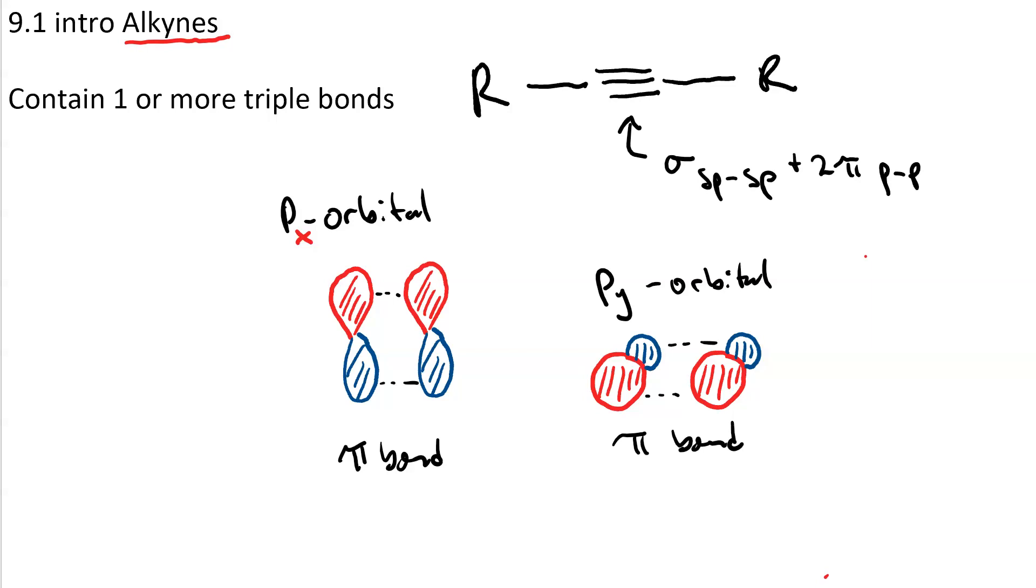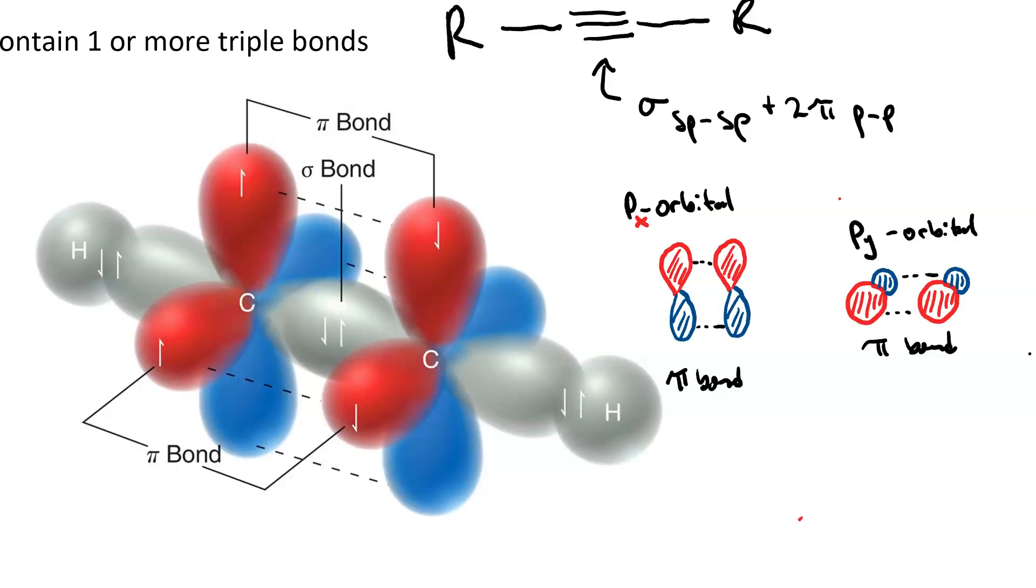So in an alkyne, we have both of these sets of px orbitals and py orbitals overlapping to give you a pi bond. This picture shows the full bonding in the triple bond. We've got a pi bond from these px orbitals in the vertical axis overlapping here and here, and our other pi bond is from these py orbitals in the horizontal axis overlapping here and here.